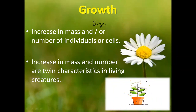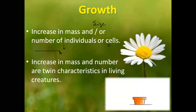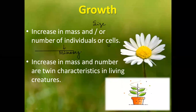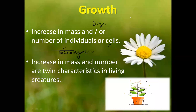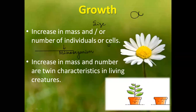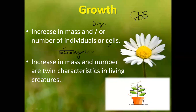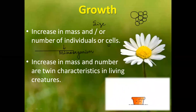Increase in mass and size is for us, whereas the number of individuals or cells is for microorganisms. For microorganisms, we do not see how big they are growing — we see how many colonies have increased, how many microorganisms are increasing. That is what is growth for microorganisms.